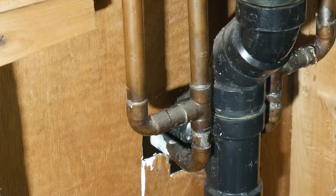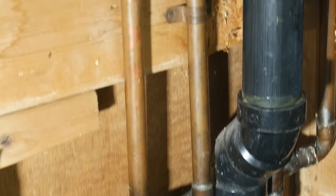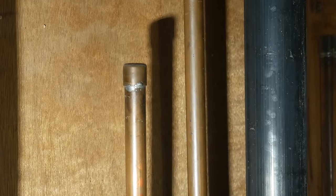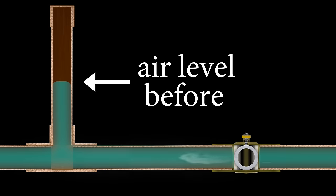Back in the days, plumbers used the air chamber method to solve this issue, which consisted of a capped standpipe near the fixture in question that would be filled with air and cushion any surges from it being closed quickly.